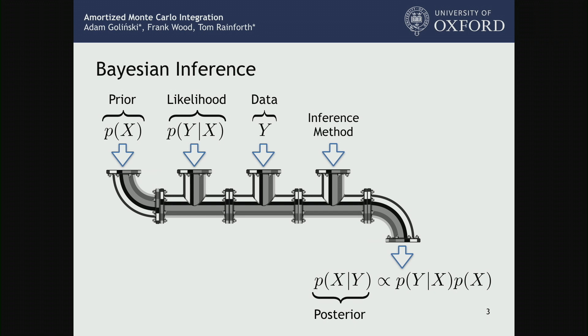Why does that relate to the previous slide? Well, this posterior is proportional to the prior times the likelihood. We can't immediately draw samples from it, but we do know it up to a normalizing constant. So this is a classic example — a huge area of machine learning — where we have expectations we care about with respect to some distribution we don't know exactly.